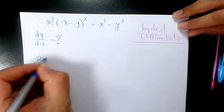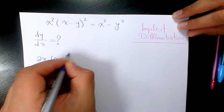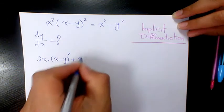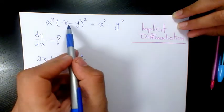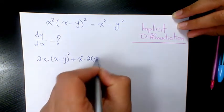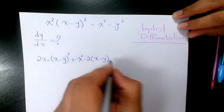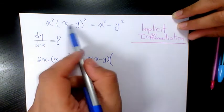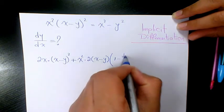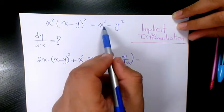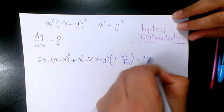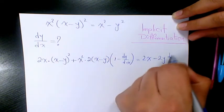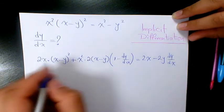...which is 2x times x minus y squared, plus x squared times the derivative of x minus y squared, which is 2 times x minus y times the derivative of x minus y, which is 1 minus dy/dx. This equals the derivative of x squared, which is 2x, minus the derivative of y squared, which is 2y dy/dx.